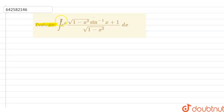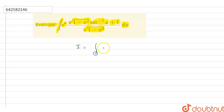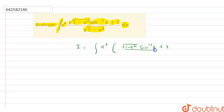The question is: evaluate the integration of e raised to power x into under root of 1 minus x squared times sine inverse x, plus 1 divided by under root of 1 minus x squared, dx.